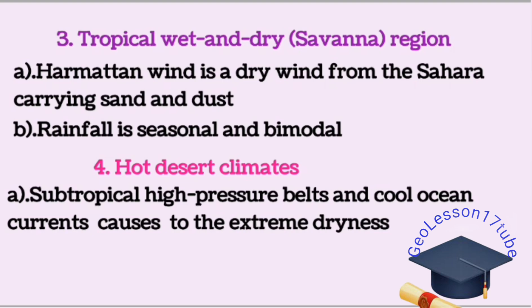Hot desert climate: subtropical high-pressure belts and cool ocean currents cause extreme dryness. For example, the Sahara region.